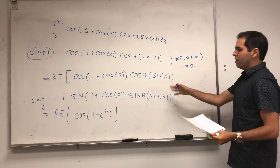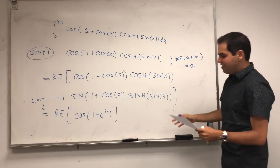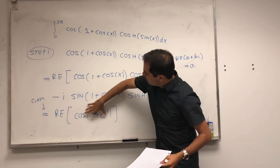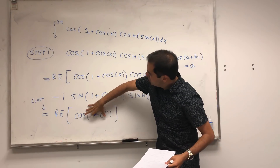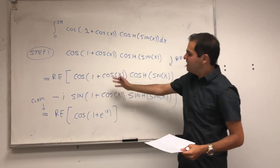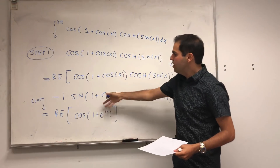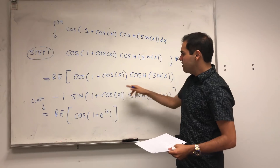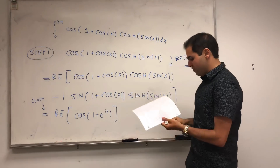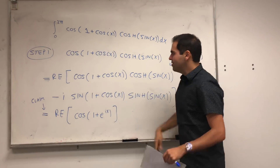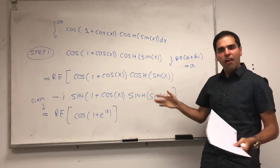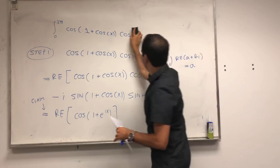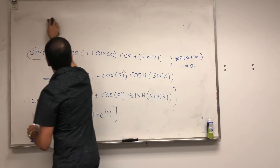Namely, cosine of 1 plus e^(ix). So in other words, what I'm really saying is I want to show that this function, if you expand it out into real and imaginary parts, you get this function. And as an aside, let me do that. It's a pretty complicated function.